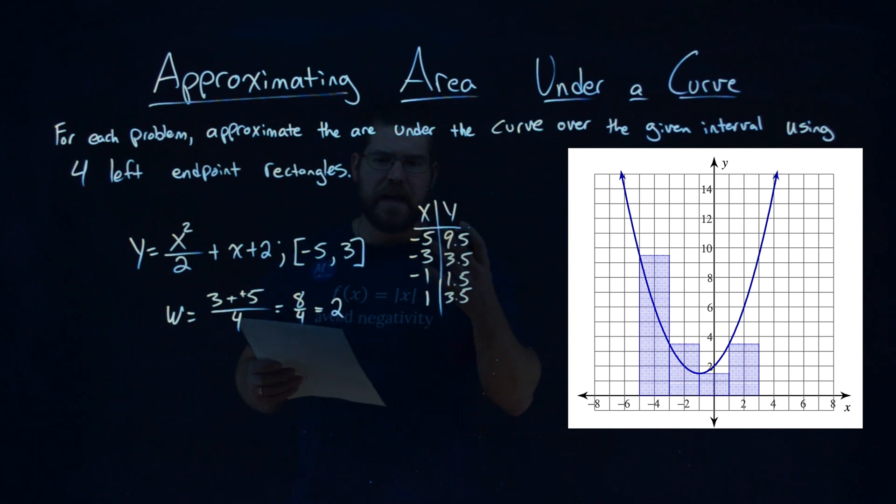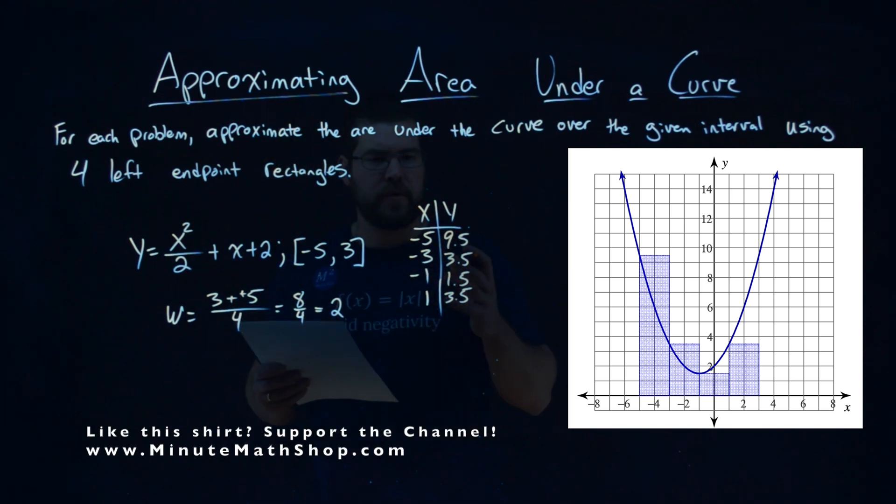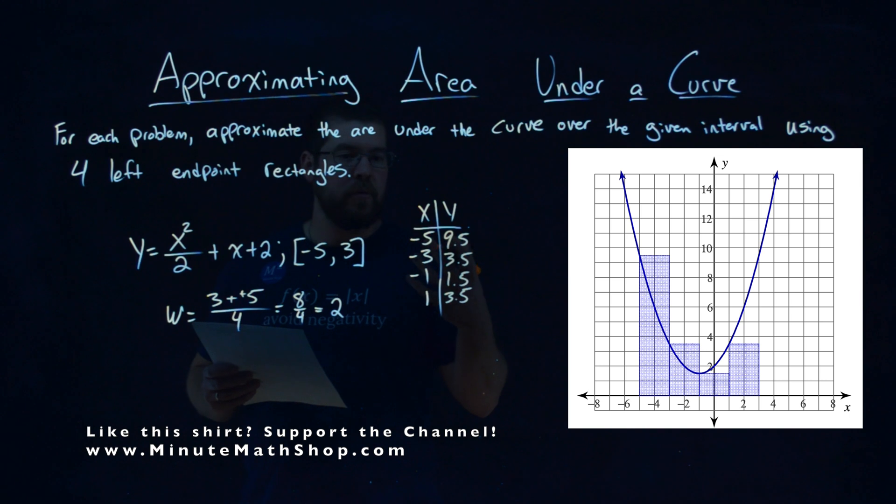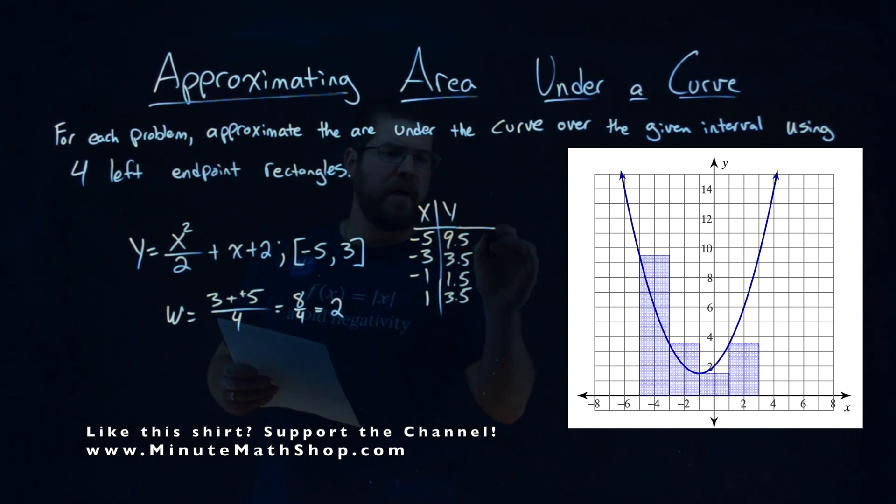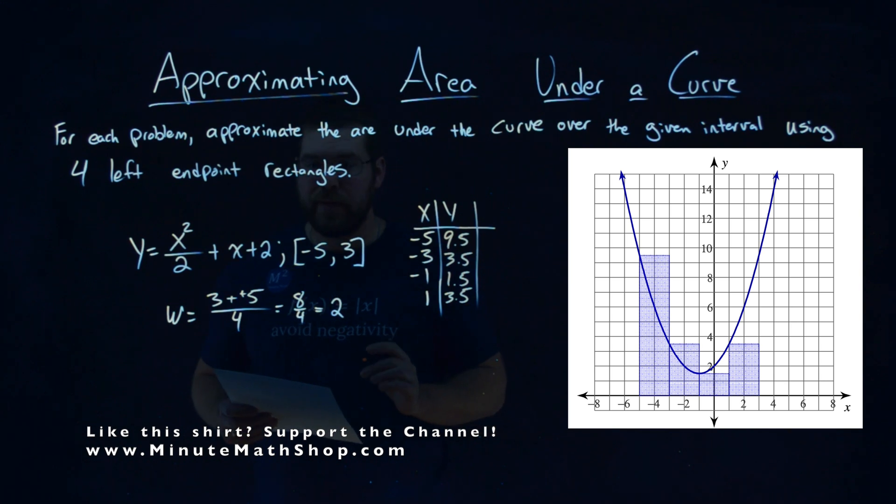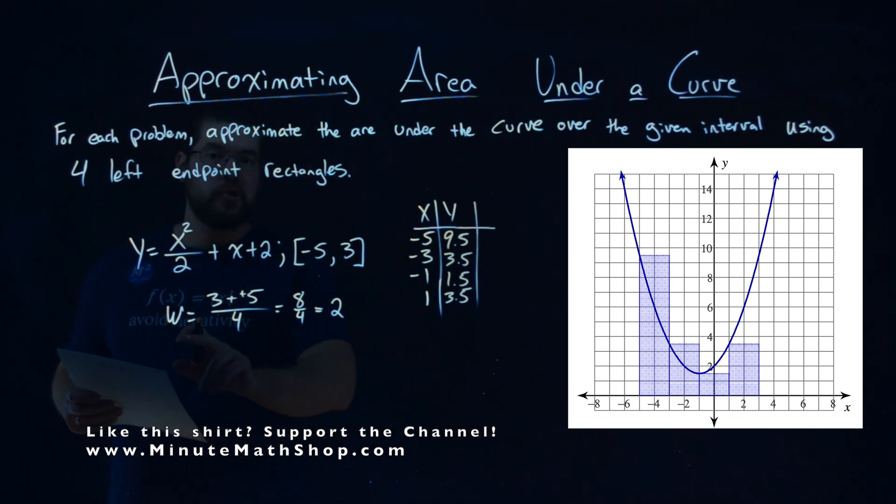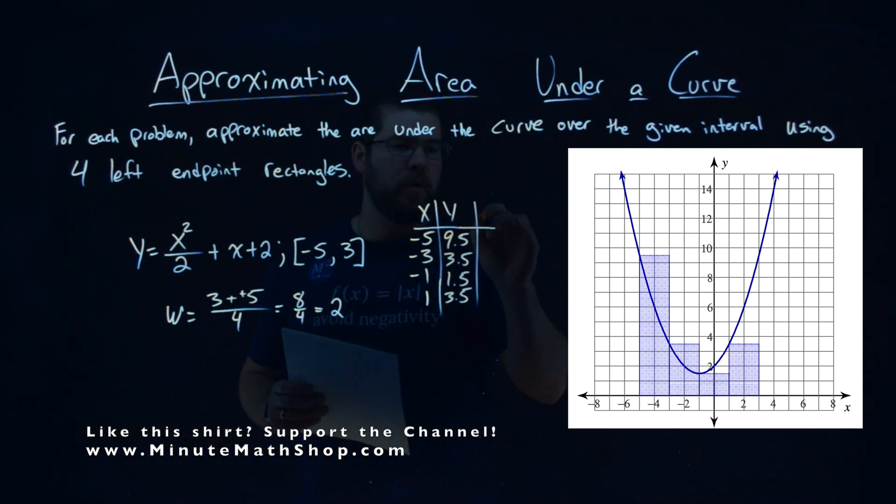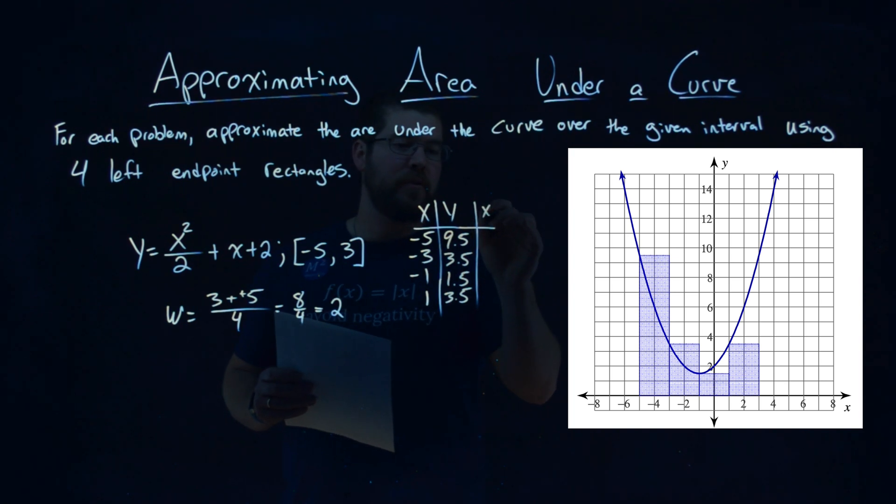What is this telling us? Well, with our rectangles, they're telling us that we have a y value right at the left endpoint of each one of our rectangles. Now, our rectangles have a width, and that width we found to be 2 units. So we multiply that y value by 2.